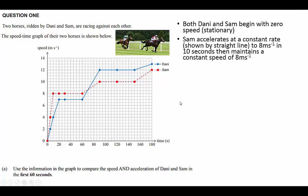So just reiterating that Sam accelerates at a constant rate to 8 meters per second in 10 seconds and maintains that speed. The calculation you would use is change in velocity over change in time, that's 8 divided by 10 giving us 0.8 meters per second squared. Double check your units are squared for acceleration.